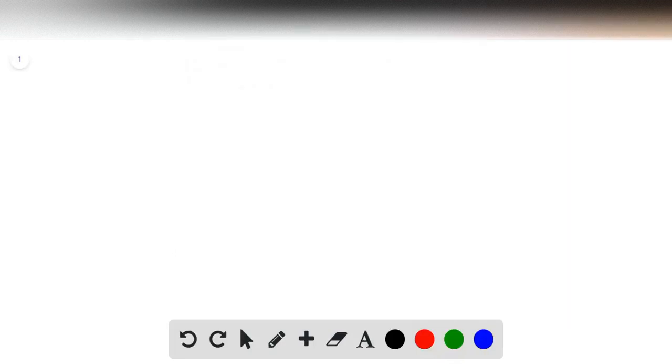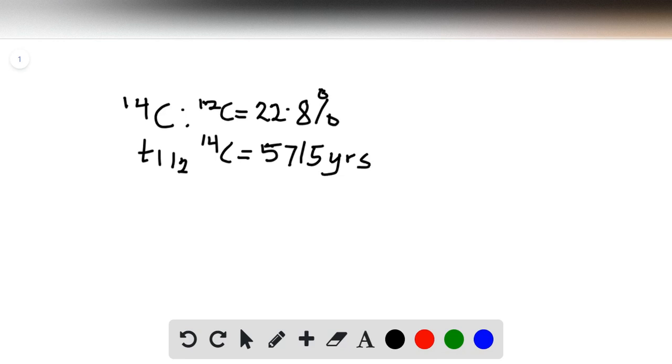In this question we've been told that a layer of peat has a carbon-14 to carbon-12 ratio of 22.8 percent of that of living organisms, and the half-life of carbon-14 is given as 5.5715 years, so five thousand seven hundred and fifteen years.